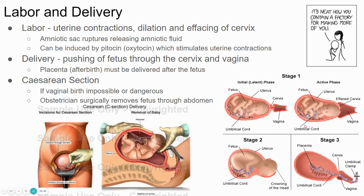Eventually, when the fetus is fully developed, it's going to be born — we call that labor and delivery. How does a woman know she's going to have a baby? She starts getting contractions. The amniotic sac might also rupture — you might hear people say 'her water broke.' What happens is the amniotic sac is filled with amniotic fluid. Sometimes, in the lead-up to giving birth, it ruptures, and the amniotic fluid can leak out of the vagina. That's how a woman knows she's probably having the baby soon.